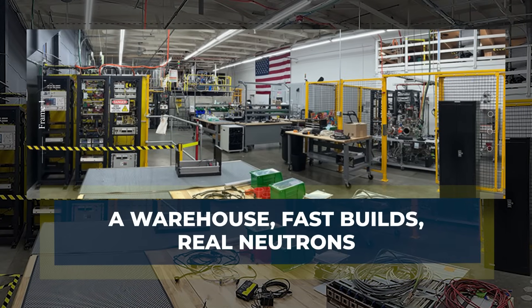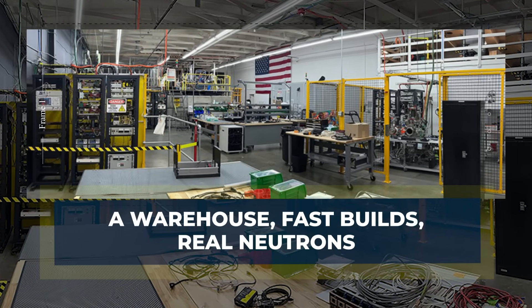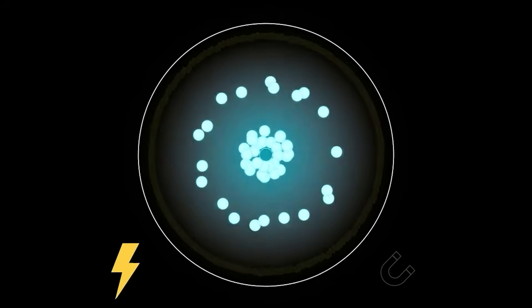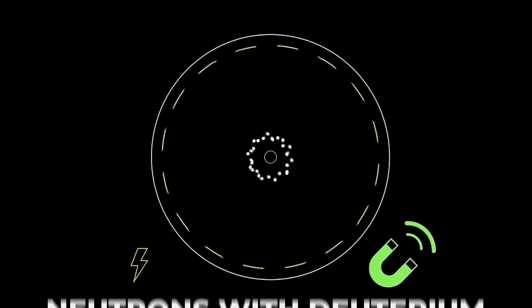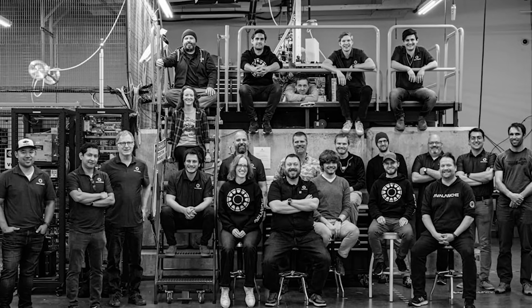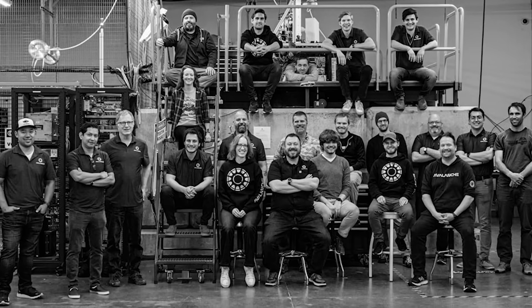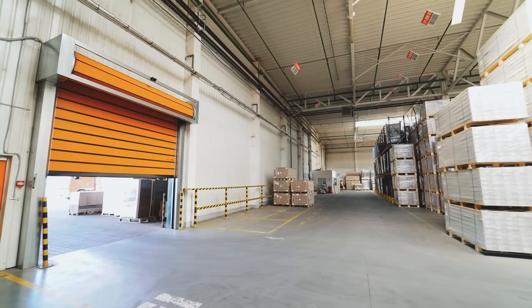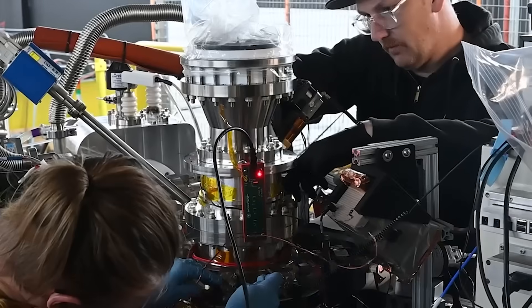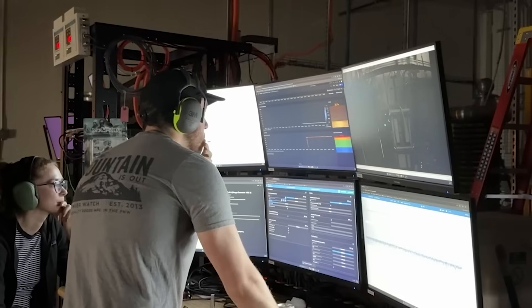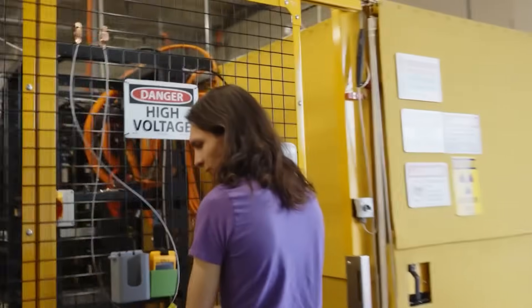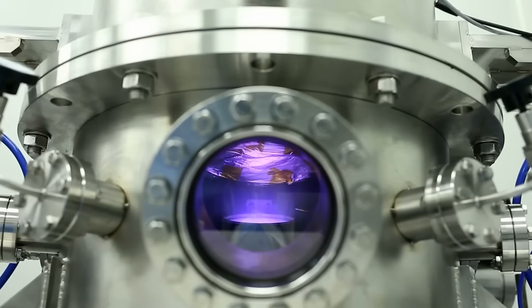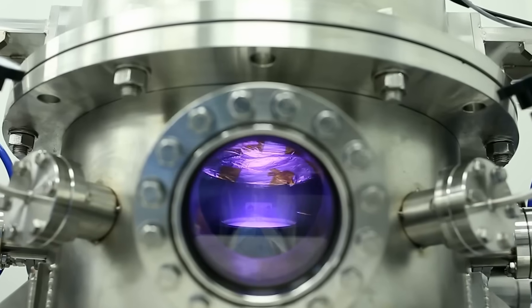The seed goal was clear: Build an Orbitron, mostly electrostatic for ions and magnetic for electrons, and make neutrons with deuterium. They moved into a warehouse with about 13 people. They avoided multi-million dollar clean rooms. They used commercial parts. Speed was the advantage. In a giant reactor, one bad design can waste years. Here, a new design could happen in two or three weeks.